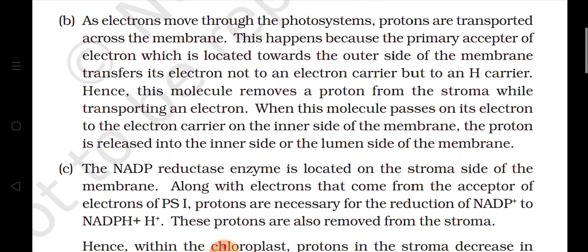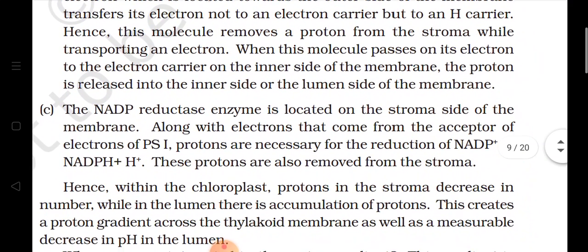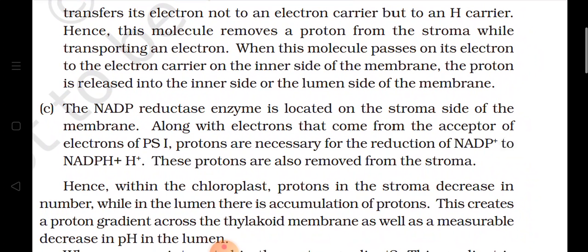Now as these molecules are passing on their electrons to the electron carrier on the inner side of the membrane, the proton is released. Electrons de rahi hai aur uske badle mein protons jo hain outer side mein aa rahe hain — yani water split hone se hydrogen ions lumen mein bane, jo ki protons hain, bahar electron acceptor hai, electron acceptor apna electron hydrogen carrier ko deta hai, aur uske badle mein jab ek electron inside enter kar raha hai, one proton is coming out. Ab is process ke liye ek enzyme hai — NADP reductase enzyme — and this enzyme is present on the stroma side. Along with electrons that come from the acceptor of electrons of PS1, protons are also necessary.